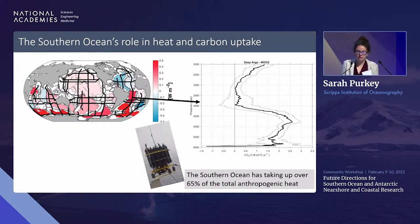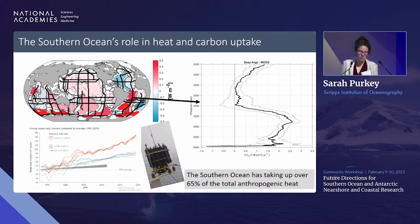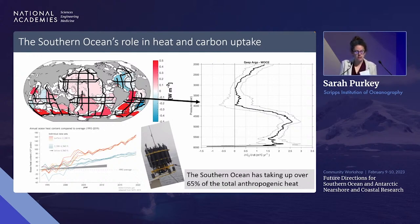This deep Argo program is not yet independent of ships — we still need ships. Finally, to understand the dynamics we really need to know the year-to-year variability. Argo-based products allow us to look at year-to-year variability in ocean heat content, which is crucial for understanding the mechanisms.